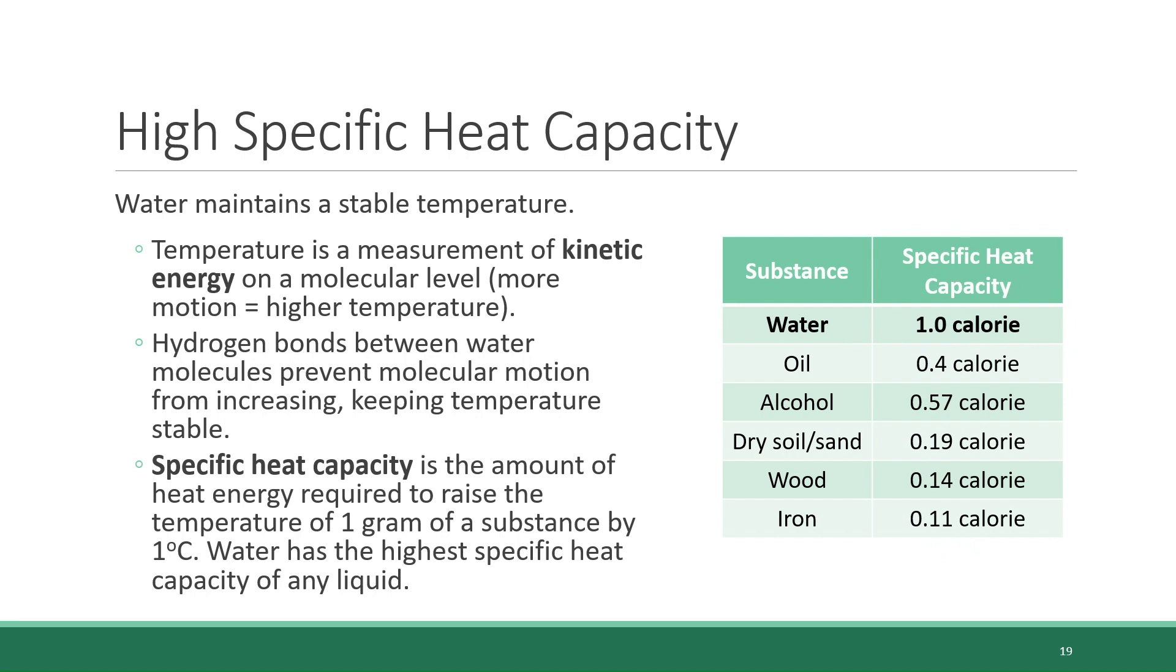And water has the highest specific heat capacity of any liquid. This means that it takes more heat energy to increase the temperature of water by one degree Celsius. The chart on the right gives you a sense of how the specific heat capacity of water measures up to some other substances. For water, it takes one calorie of energy to raise one gram of it by one degree Celsius. For oil, it takes less than half of that amount of energy, 0.4 calories. For alcohol, it's 0.57 calories. Dry soil or sand is 0.19 calorie. Wood is 0.14 calorie. And iron is 0.11 calories. So as you can see, compared to other substances, it takes much more energy to increase the temperature of water.